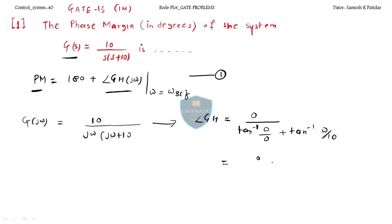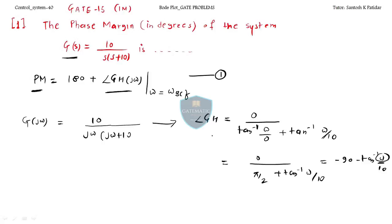For this system, the phase is: numerator contributes 0, and the denominator gives minus π/2 plus tan⁻¹(ω/10). So the total phase is minus 90 minus tan⁻¹(ω/10). You need ω — specifically ω_gc, the gain crossover frequency.